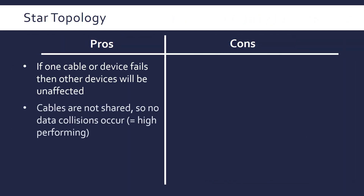Also, because the cables aren't shared — because each device has a separate cable going to the central device — no data collisions occur, or very few occur. So it's said to be a high-performing topology. If you have data collisions, you have multiple devices trying to communicate using the same wire, which slows down the network and you have to retransmit the data. In this topology, that doesn't really occur because they have separate wires to the central device.